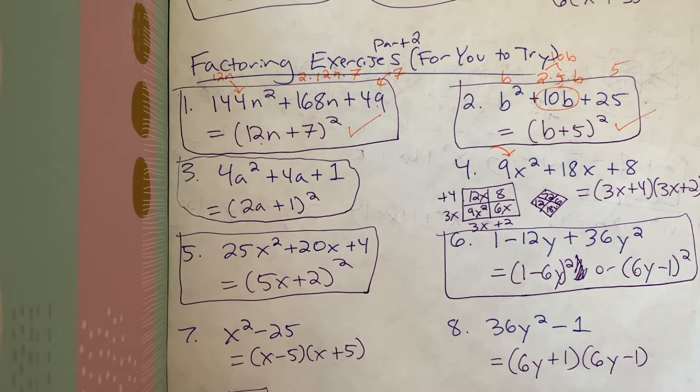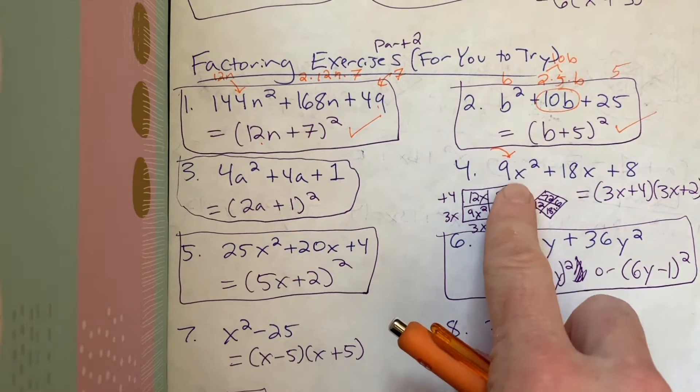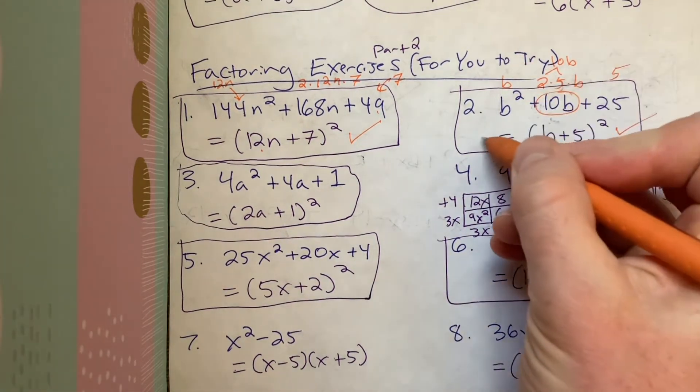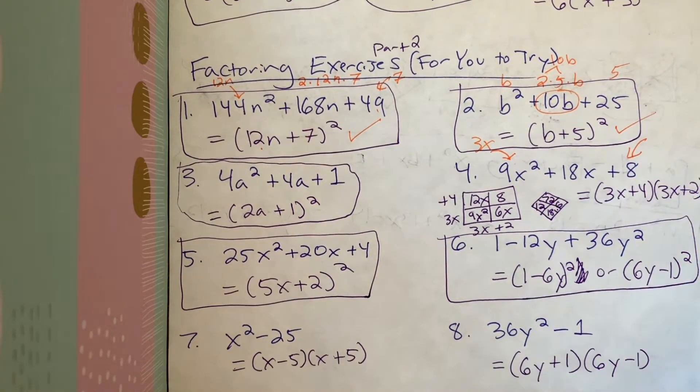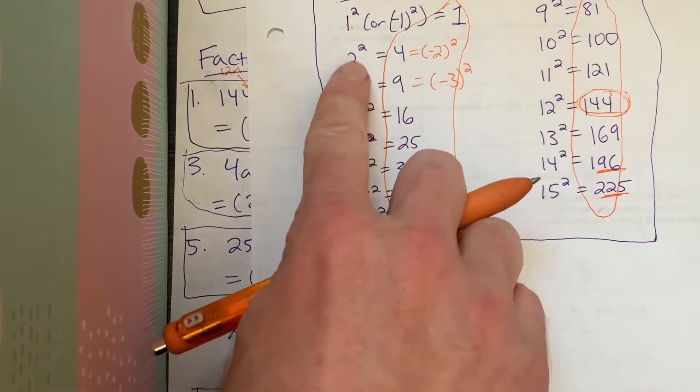The front term here was a perfect square. Square root of 9x squared would be 3x. But the final term, 8. 8 is not a perfect square. 8 is somewhere,